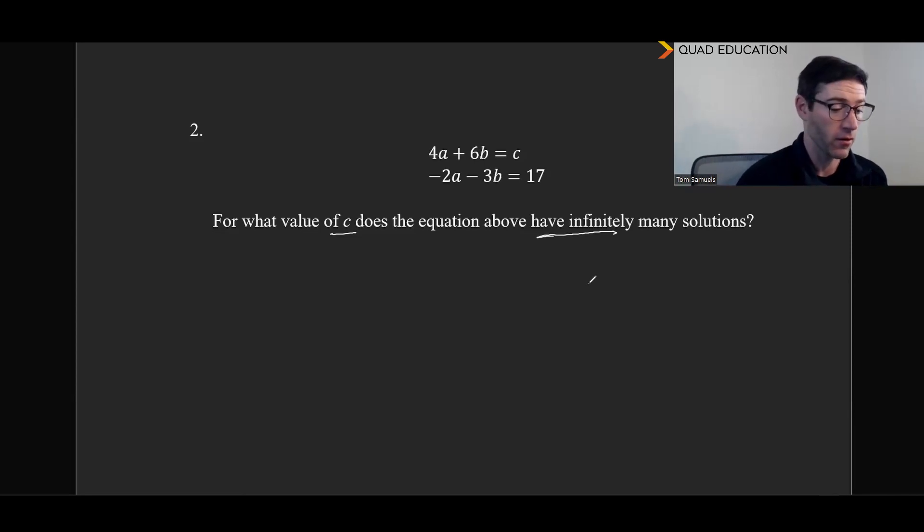And similar to last time, in order to get from negative 2a to 4a, we're going to multiply that by negative 2. We're going to have 4a plus 6b equals c. And we distribute our negative in here, and we're going to get 4a plus 6b equals negative 34. And so in this case, our c value, what this needs to be right here for these to be exactly the same line is going to be negative 34.